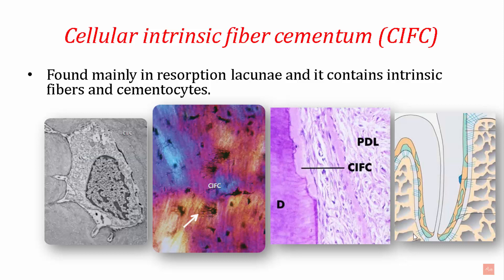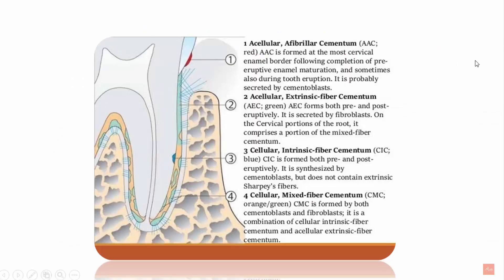The fourth type is cellular intrinsic fiber cementum, found mainly in the resorption lacunae. It contains intrinsic fibers and cementocytes. A typical cementocyte has canaliculi radiating out from its surface and a visible nucleus indicating active function. The fibers present are formed by the cementocytes themselves. Clinically, when excessive force, trauma, or orthodontic movement creates pressure areas where dentin or cementum is lost, these resorption lacunae are filled by cellular intrinsic fiber cementum.